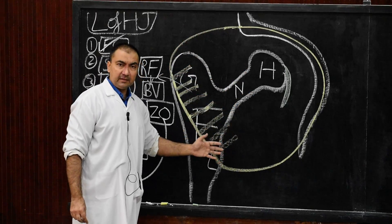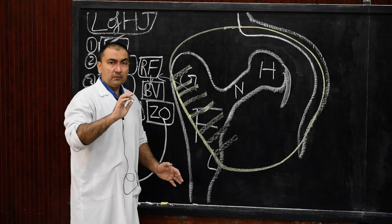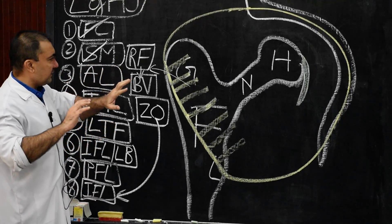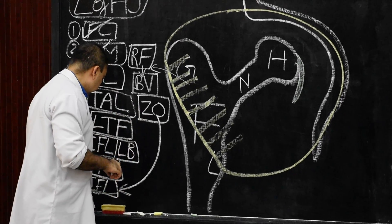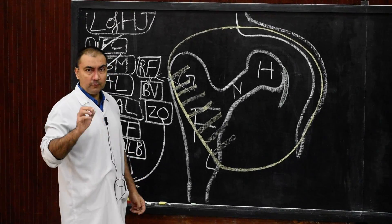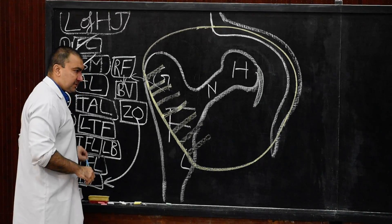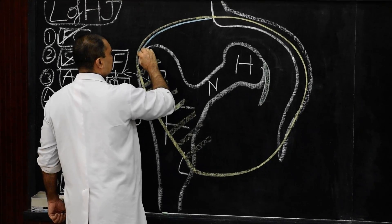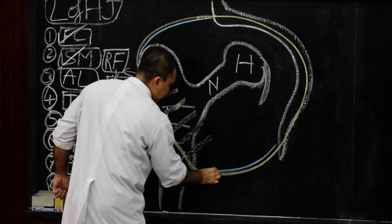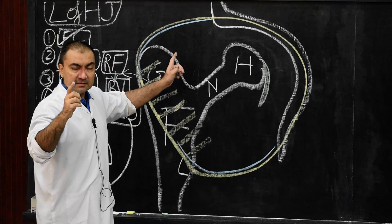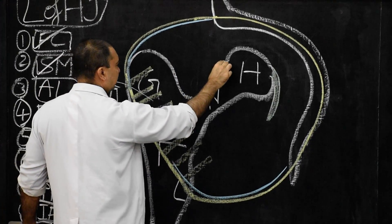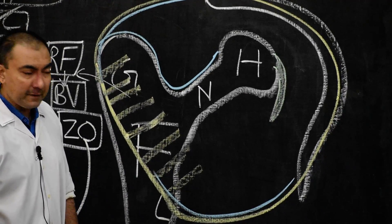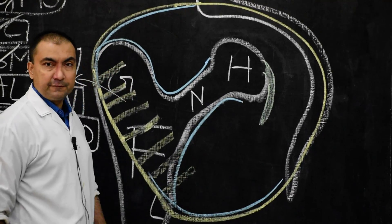Now we discuss the synovial membrane, which lies just beneath the capsule. Its attachments are: number 1 — the synovial membrane lines the inner surface of the fibrous capsule; number 2 — it lines the inner surface of the neck of the femur.